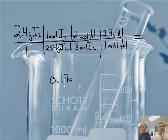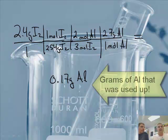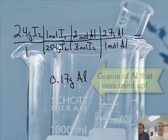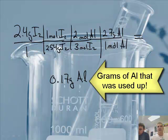What do you get? We'll get 0.17. So 0.17 grams of Al. Now what does that mean? That's how many grams of aluminum it would take to react with the 2.4 grams of iodine. So how many grams do we have? We started with 1.2.